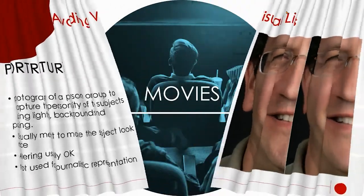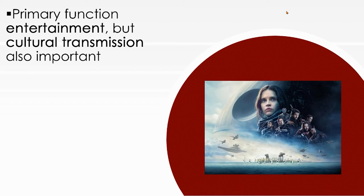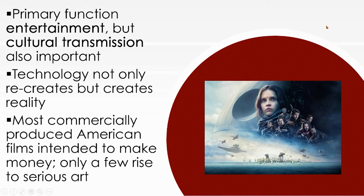That wraps up photography. Let's talk about movies. The primary function of the movie industry is entertainment, though cultural transmission also becomes important. Technology not only recreates but creates reality — science fiction is the perfect example. In America, most commercially produced films are intended to make money, not art. Sometimes films are made for art, but most of the time the commercial industry is just to make money.